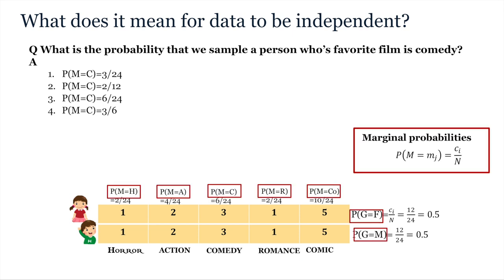Each of these probabilities that we just calculated are examples of marginal probabilities, the probability of some specific event occurring outside of any consideration of other events. For gender we estimate the probability of boys or girls by summing all elements in that row and dividing by the total. For movies we instead sum all elements within the column and again divide by the total.